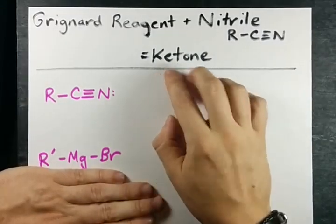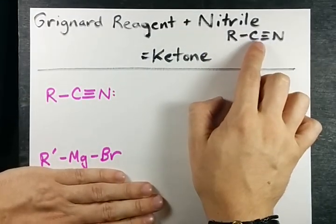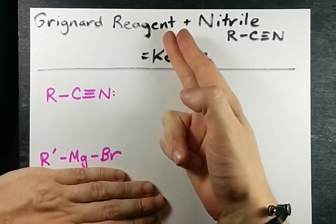How to create a ketone if you're starting with a nitrile? Well the answer is use a Grignard reagent.